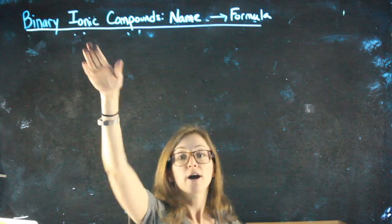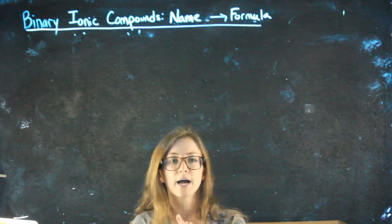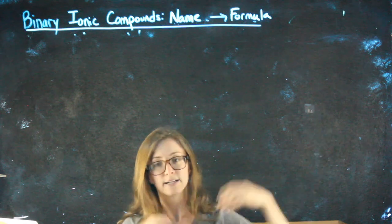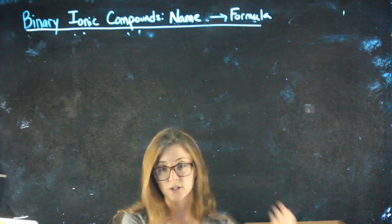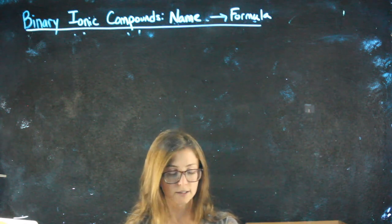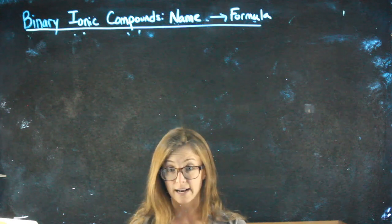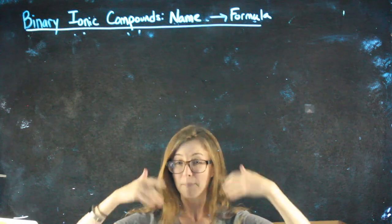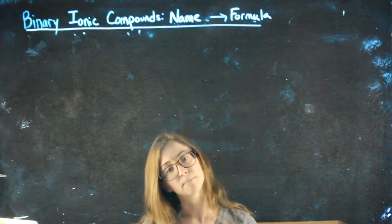So ionic compounds, or ionic bonding to form a compound, happens when one element gives up electrons and another element takes those electrons. There's a full transfer of electrons. Electrons themselves are negative, so when something gives up an electron, it's giving up negative charge, that leaves it positive.